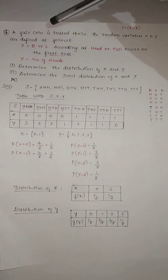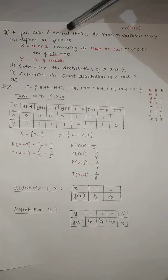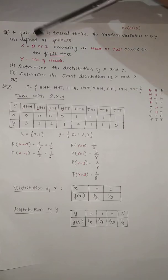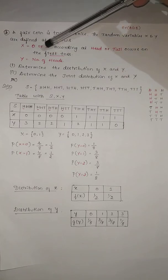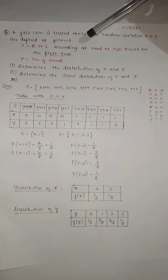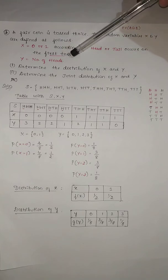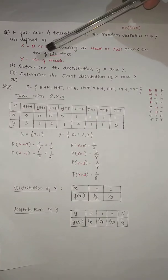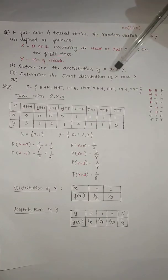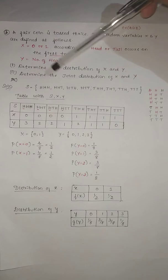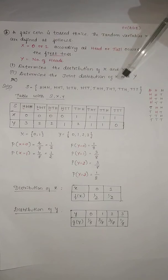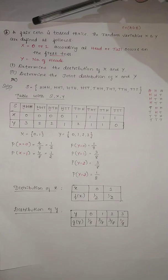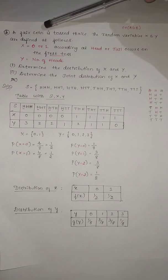In this video we will see one problem on joint probability distribution. The problem is: a fair coin is tossed thrice. The random variables X and Y are defined as follows: X is equal to 0 or 1 according as head or tail occurs on the first toss, and Y represents the number of heads. The first question is to determine the distribution of X and Y, and the second is to determine the joint distribution of X and Y.